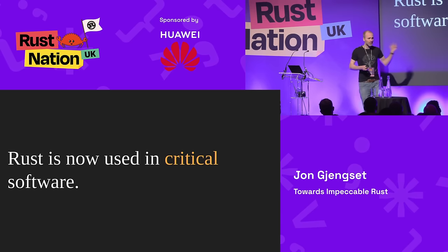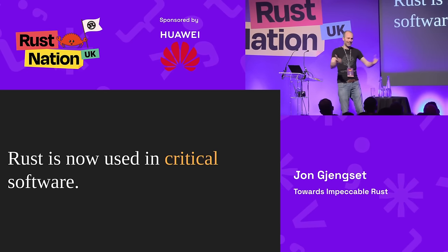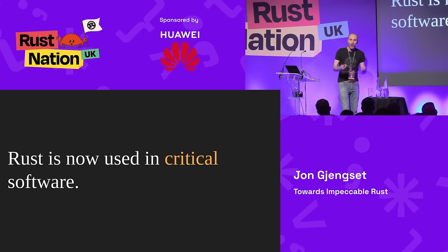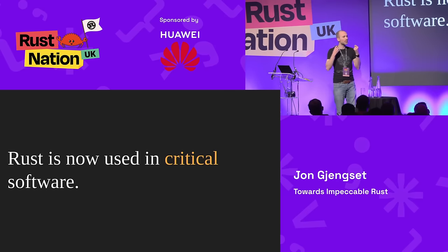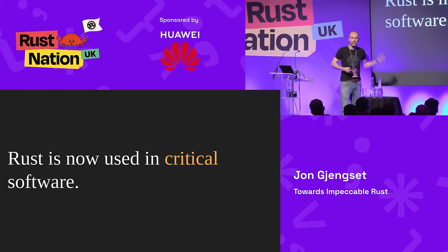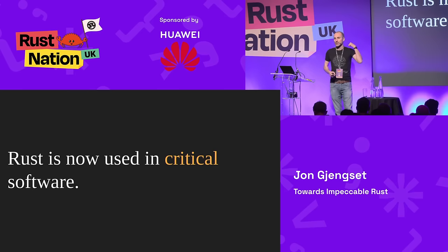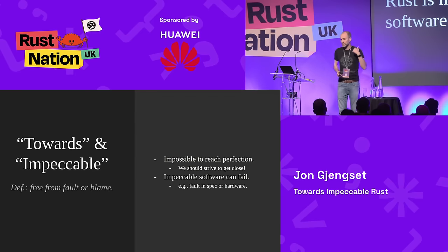And remember, this is where we want Rust to be. We believe — and I'll use the sort of royal we here — that we want Rust to be in these critical systems because it has properties that make this the right place to use it. Rust has unique things that we think make it the right tool for doing this successfully.